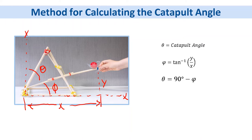So using this formula we can figure out by subtracting 90 degrees from our phi angle we can figure out what our catapult angle is.